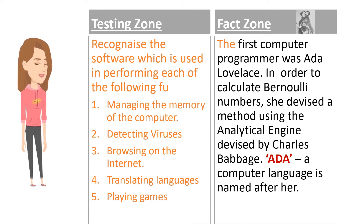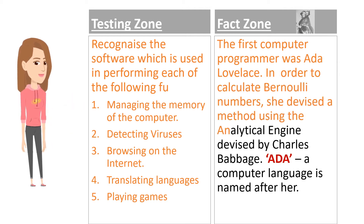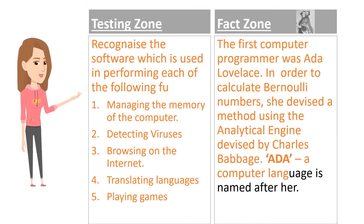Fact Zone: The first computer programmer was Ada Lovelace. In order to calculate Bernoulli numbers, she devised a method using the analytical engine devised by Charles Babbage. Ada — a computer language — is named after her.